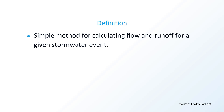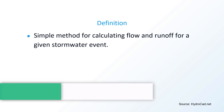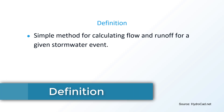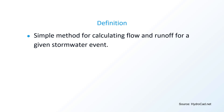Let's give a simple definition for the rational method. It is a simple method for calculating flow and runoff for a given stormwater event. Let's say you have a parcel of land — rainfall occurs on that land — the rational method is there to calculate how much of that water is going to run off. So we know how much water is coming off the site, how much do we need to treat or put in a detention facility. This equation gives us a rough estimate of that amount.